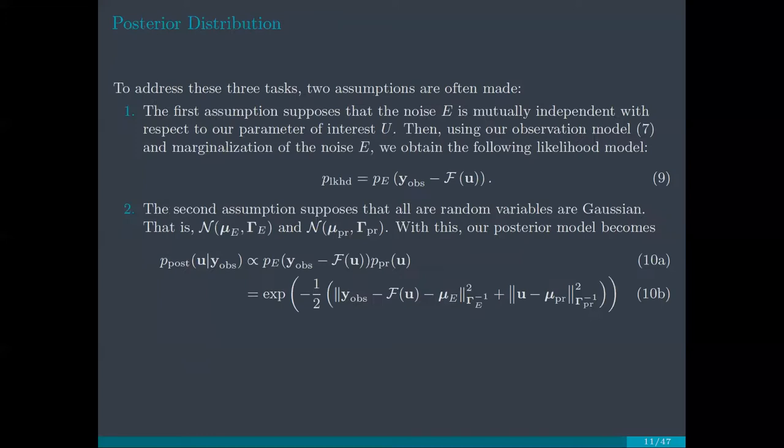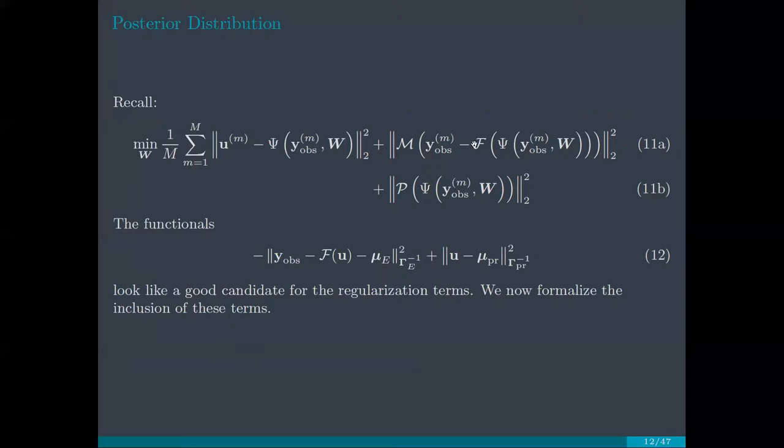And to skim through most of the details here, essentially we treat our observation data, our parameter of interest u, and the measurement noise error as random variables. With certain assumptions, we end up with a loss function, equation 10 here, where the solution of a Bayesian inverse problem is a probability density and not just a direct value. And this probability density with the appropriate Gaussian assumptions and assumptions of independence uses a log function exponential term here in equation 10b.